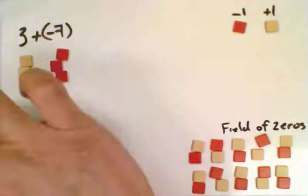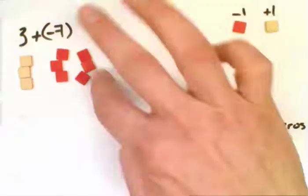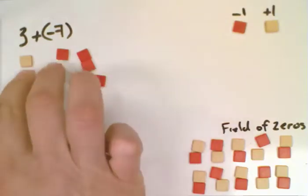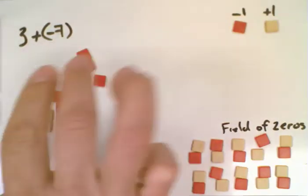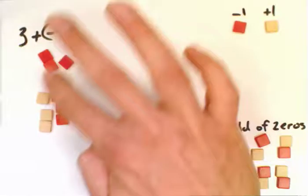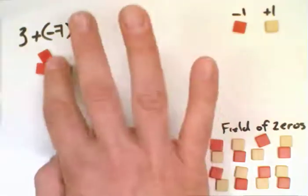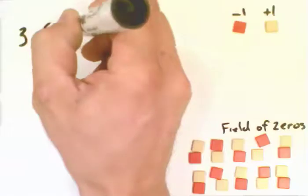So we're going to bring in negative 7 here. And when we add or subtract algebra tiles, once we have all the tiles there, we just use the zero principle. We take all the zeros out. So we have 3 zeros that we can produce. We remove those, and we're left with negative 4.